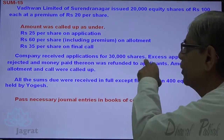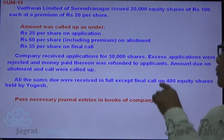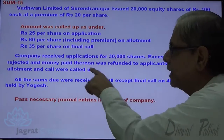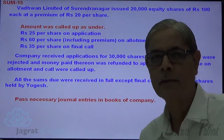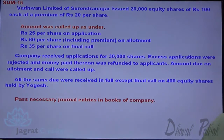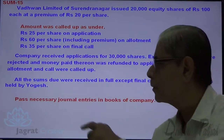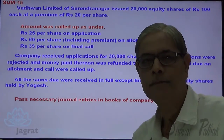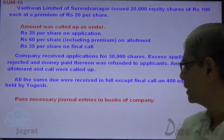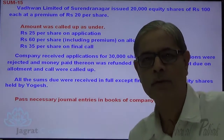The company received applications for 50,000 shares. Excess applications were rejected and money paid thereon was refunded to the applicants. The amount due on allotment and calls were ordered. All sums were received in full except the final call on 400 shares held by Yogesh. We are supposed to write down the journal entries.